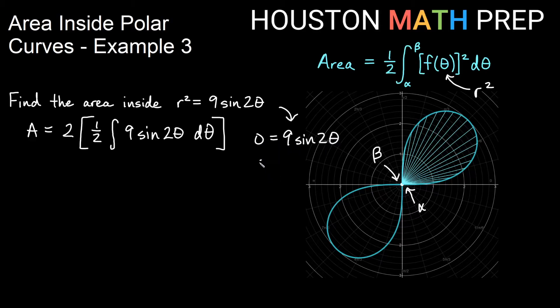We could divide by 9 to get 0 = sin(2θ). Where is that true? The first place would be at 0, since sin(0) = 0. And the next place would be at π.